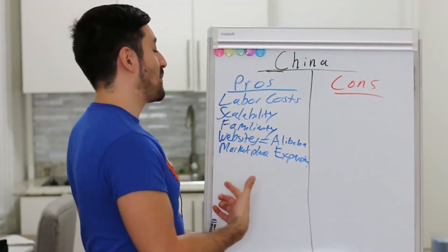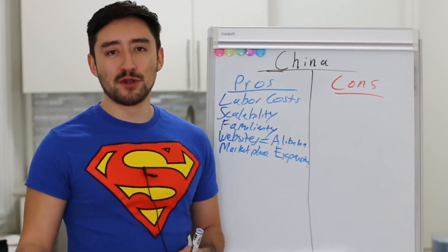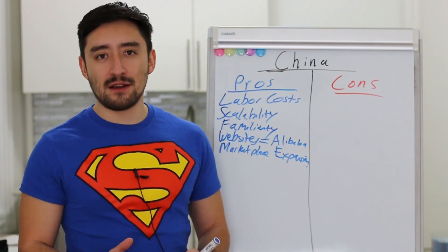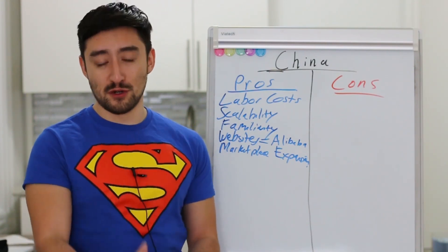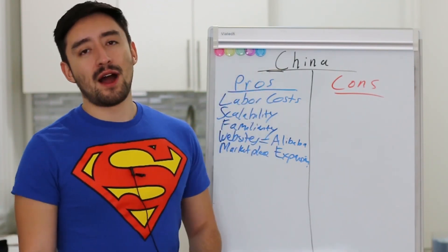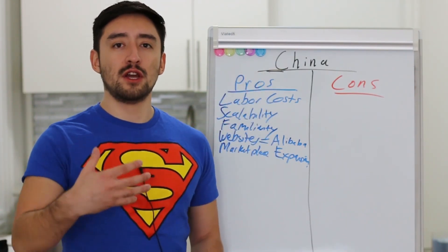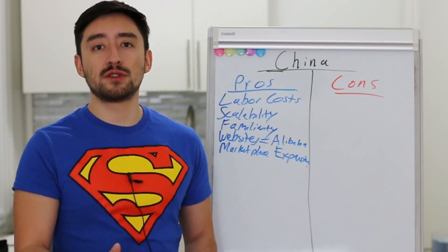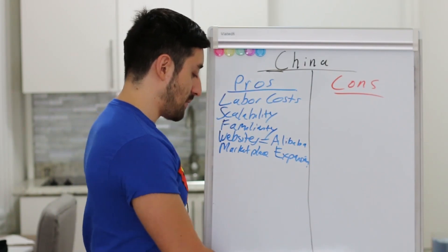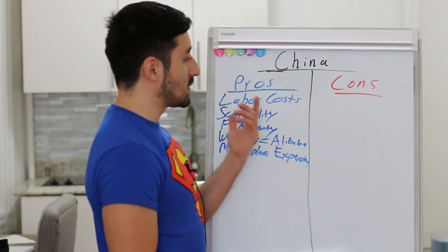Now, I'm not including this on my pro list, but basically if you wanted to, you could reproduce other products out there because of the sophistication of Chinese manufacturing — you could reverse engineer products. There's reproduction capability, but I'm going to leave that up to you. I try to focus on new and innovative products with my coaching students and particularly when it comes to Kickstarter. So let's talk about the cons of Chinese manufacturing.